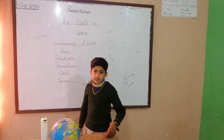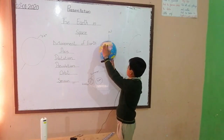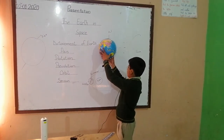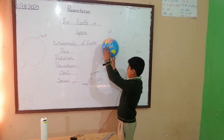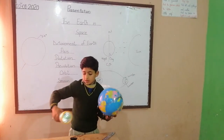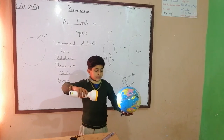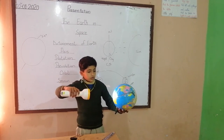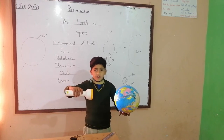This movement causes Day and Night. When one side of the Earth faces the Sun, it is called Day. The other side which does not face the Sun is called Night.